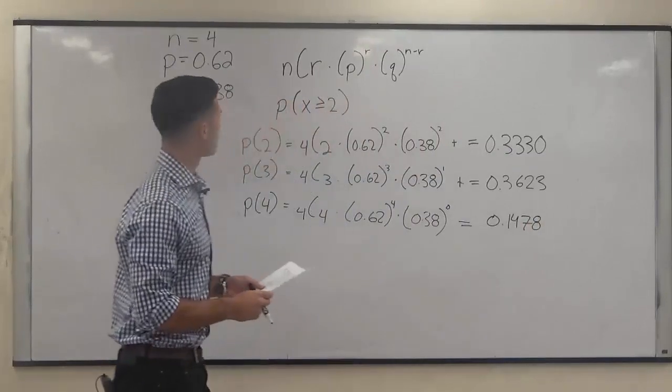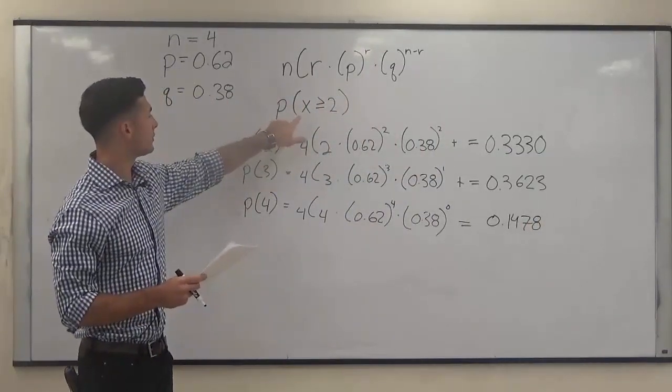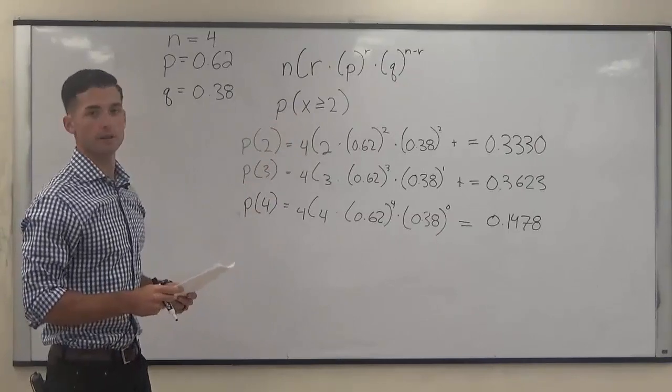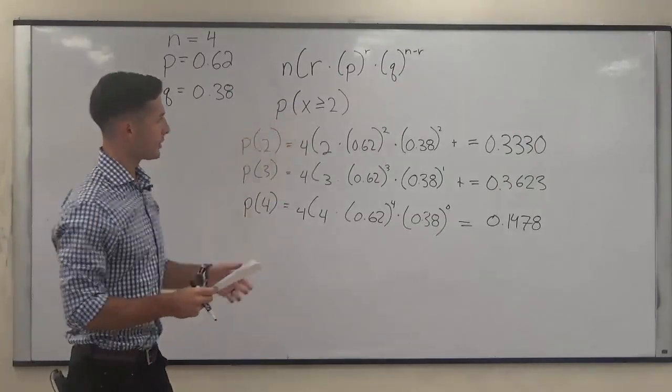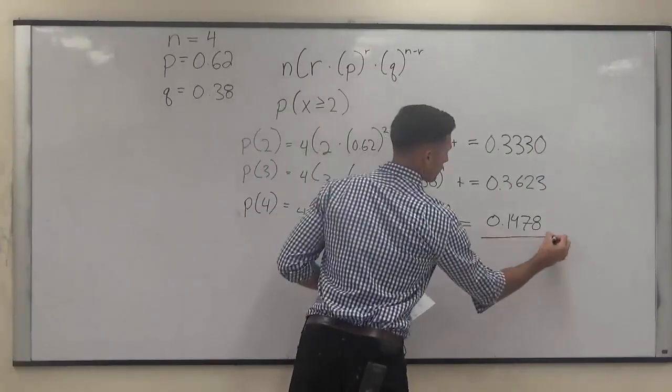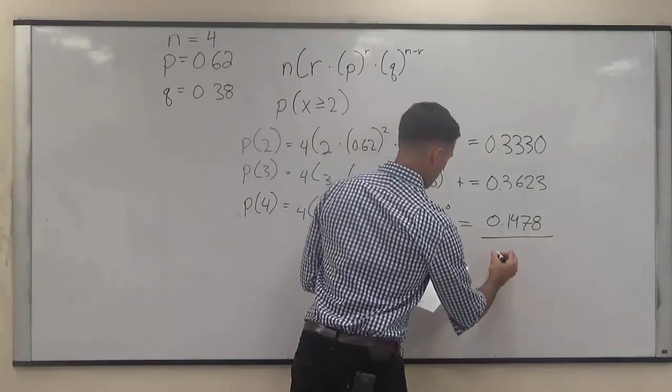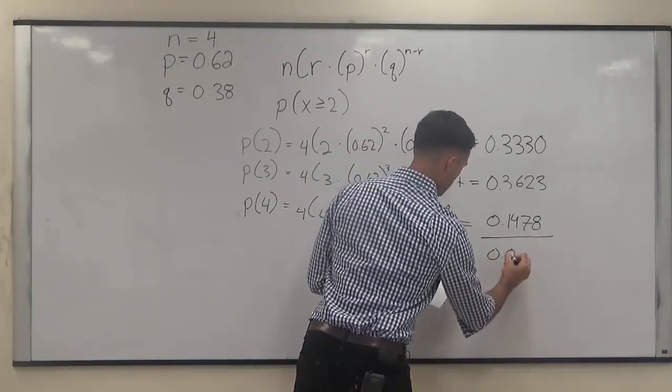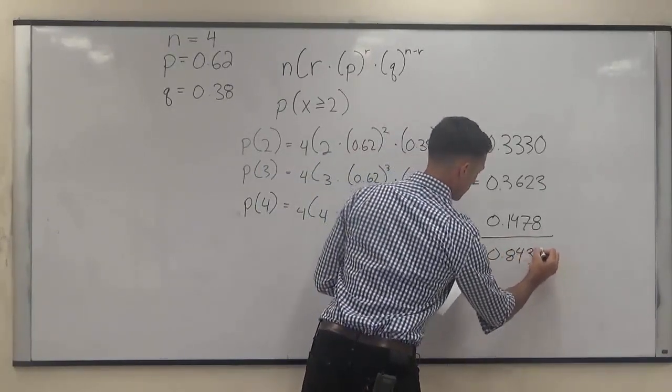So now, since the problem was asking what's the probability of at least 2 responding this way to the survey, you need to add all those up. And when you do that, you get 0.8431.